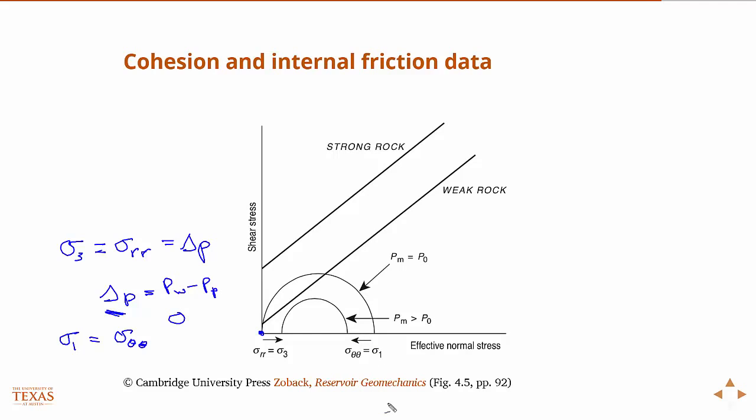And if we increase the delta p, in other words, if we increase the mud weight moving the delta p away from zero, then we shrink that Mohr circle and we move it off the failure line. So this scenario of a balanced mud weight here would be an unstable wellbore because the Mohr circle touches this line, crosses it, in fact. But if we increase the mud weight, we shrink that Mohr circle, moving it off that line and increasing wellbore stability.